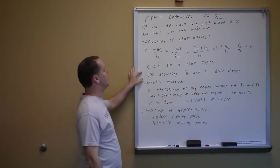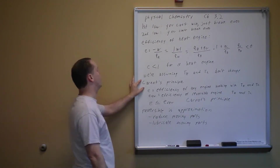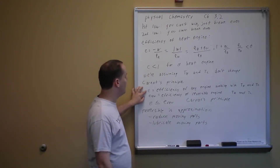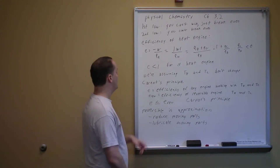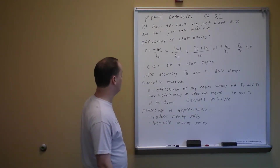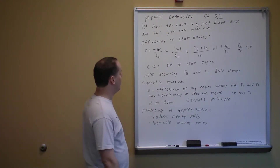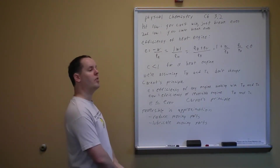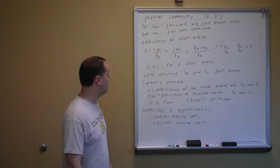For calculations, we assume the temperatures of the hot and cold reservoirs are constant. Now, Carnot's principle: there are two types of efficiency — the efficiency of any real engine, and the efficiency of a reversible engine (denoted with subscript rev). Carnot's principle states that the efficiency of a real engine is less than or equal to the efficiency of a reversible engine. Keep in mind that a reversible engine is a theoretical approximation used for calculations.